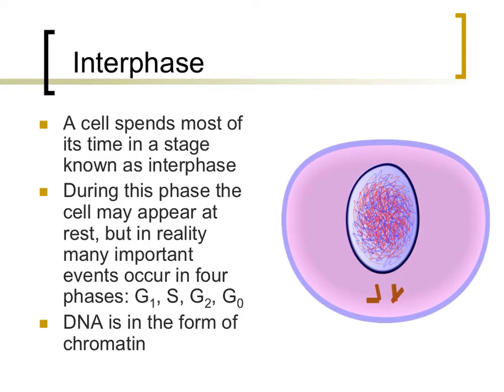Interphase can be broken down into four sub-stages that will be described throughout the rest of this video. These stages are abbreviated as the G1, S, G2, and G0 phases.